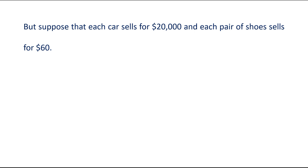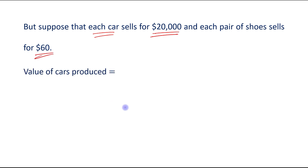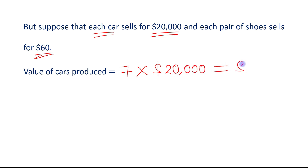But suppose that each car sells for $20,000 and each pair of shoes sells for $60. If we define market value and set market prices, then the value of cars produced is 7 times $20,000, which equals $140,000.